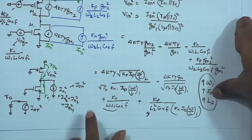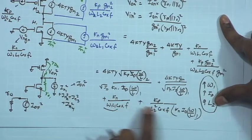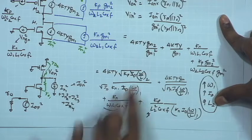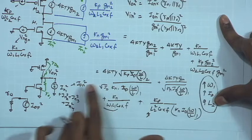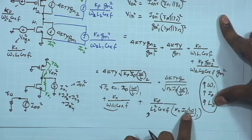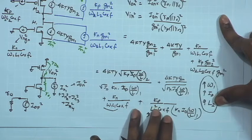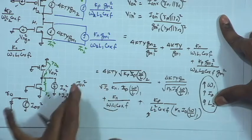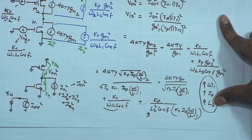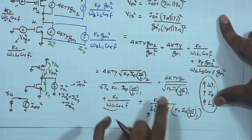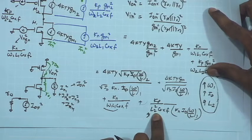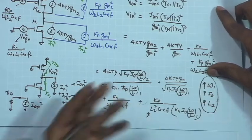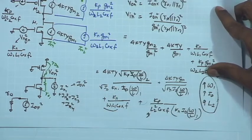The 1/f corner frequency is obtained by equating the two noise terms. This mandates a much larger L2 value and a larger Id value, since Id appears in the denominator. Along with that, a larger W/L of the input device is also required. So the three parameters to increase are: Id, W of the input device, and the channel length L2 of the load device.